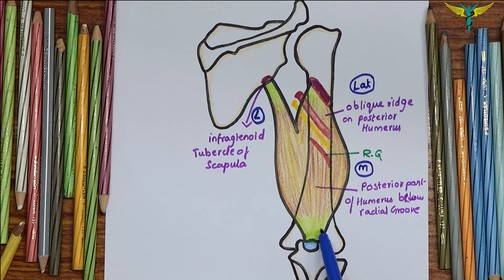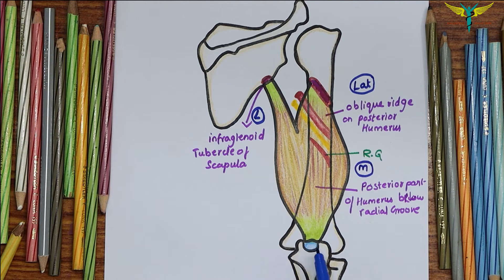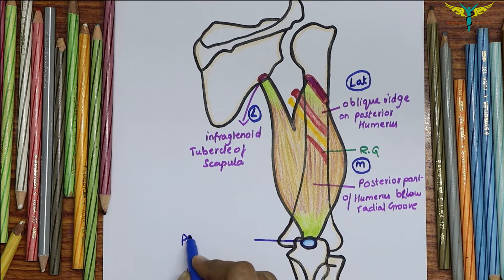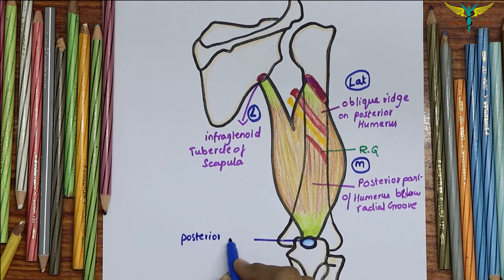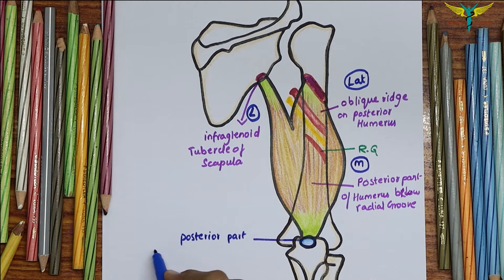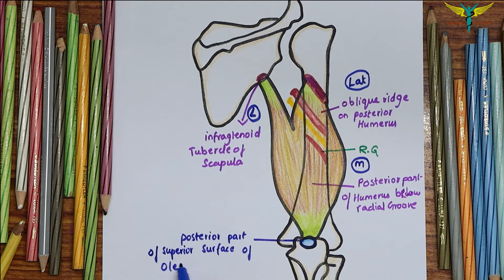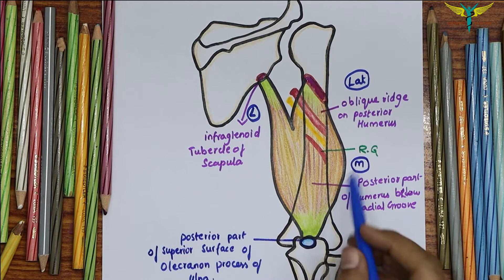The insertion is by a common tendon that is inserted into the posterior part of the superior surface of the olecranon process of the ulna. This is the insertion point — the posterior part of the superior surface of the olecranon process of the ulna.